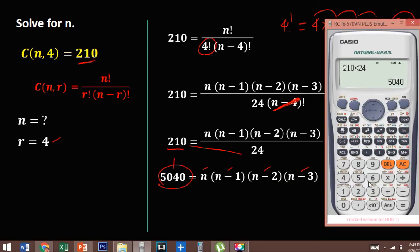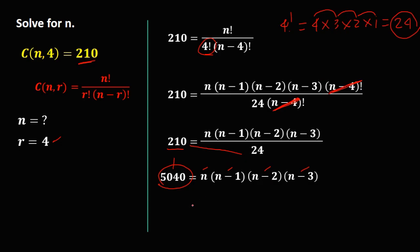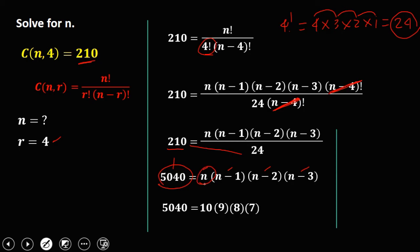If we try 6 times 7 times 8 times 9, that's 3024. But 7 times 8 times 9 times 10 equals 5040. We write the highest number first, so 5040 equals 10 times 9 times 8 times 7. Therefore n equals 10.